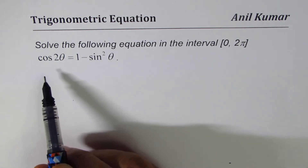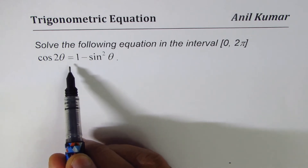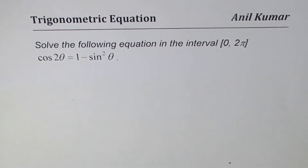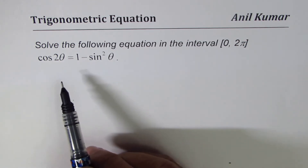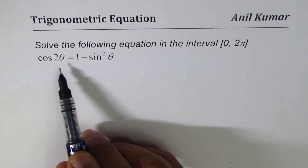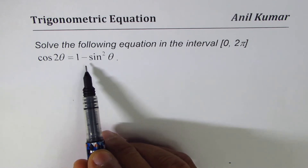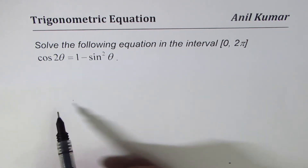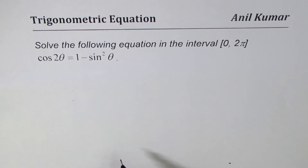The question is: solve the following equation in the interval zero to two pi. The equation is cos(2θ) equals one minus sin²θ. You can always pause the video, try the question, and then look into my suggestion. In such equations it is important to write the trigonometric identity in one trigonometric ratio.